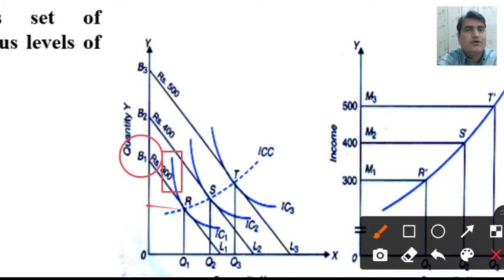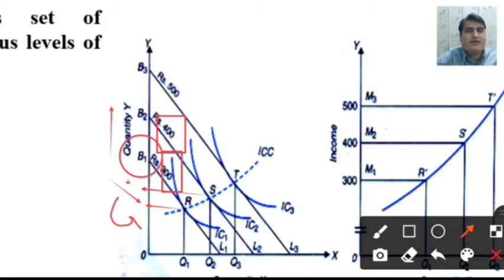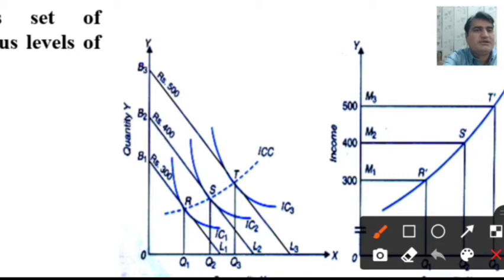When the income of the consumer increases from 300 to 400, the consumer shifts towards a new budget line B2 and L2, where the consumer achieves equilibrium at point S, purchasing OQ2 quantity of X commodity and OG1 of Y commodity. When the consumer's income increases from 400 to 500, the consumer switches towards a new budget line, and the consumer achieves equilibrium at point T, where the consumer purchases OQ3 quantity of X commodity.